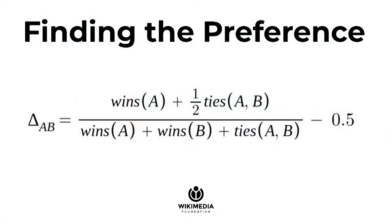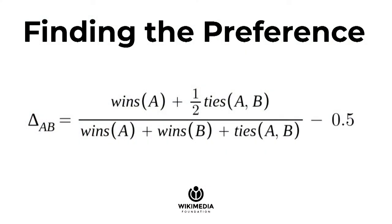The question might be: we have all these votes — how do we generate our preference? This equation is just a ratio. We take the number of wins for A, plus half the ties for A and B, divided by the wins for A, wins for B, and the ties for A and B. A tie occurs when a user clicks results from both rankers in the same session. Basically this is all the users, and this is the users that voted for A. We subtract a half from the end, which makes it convenient — now you have a value centered at zero, where everything above zero is a preference for the A ranker and everything below zero is a preference for the B ranker.